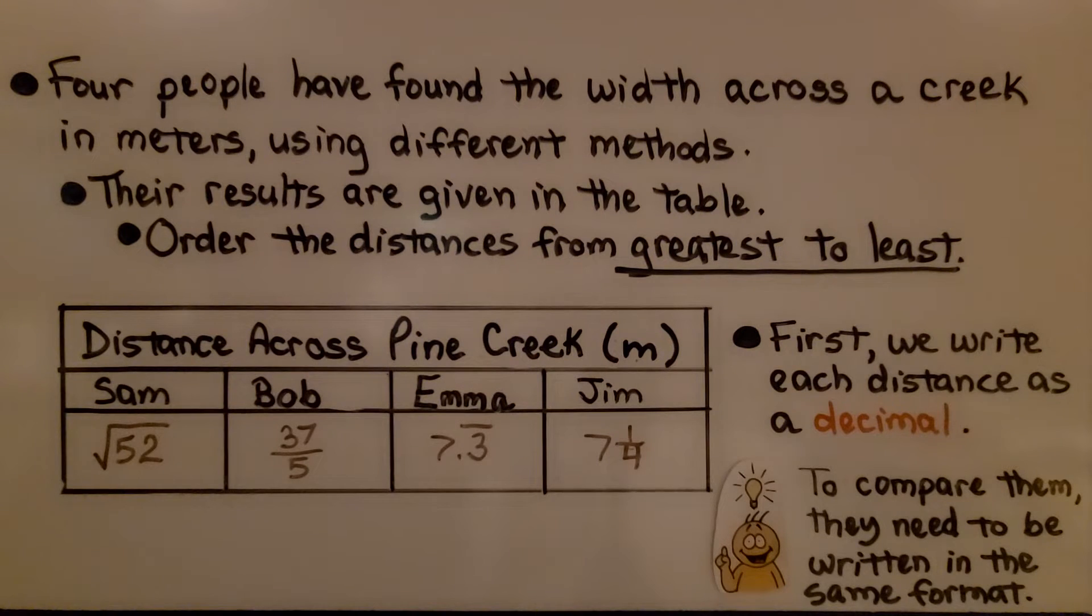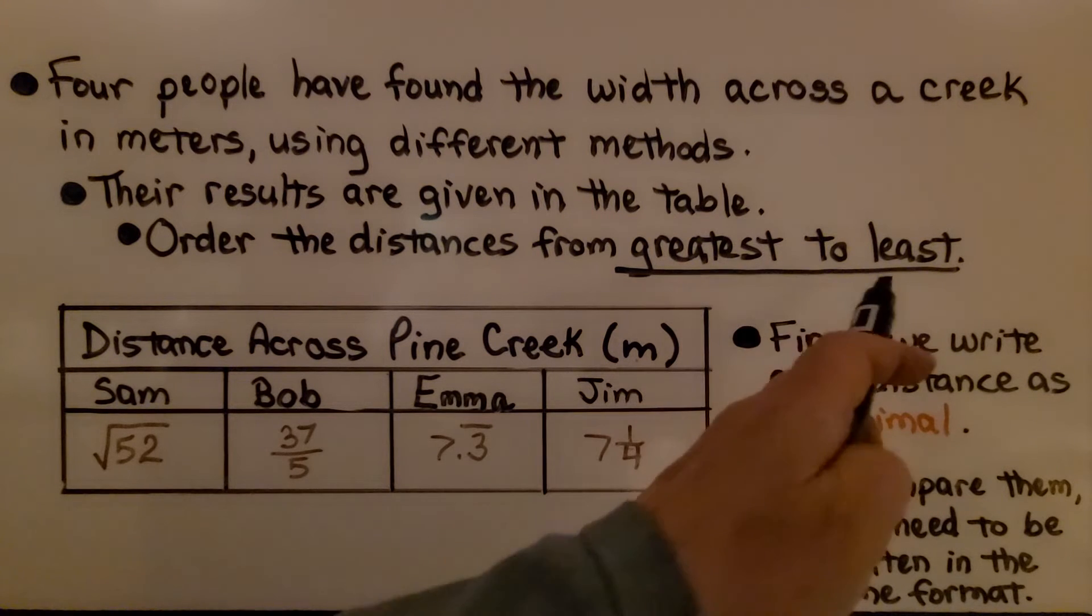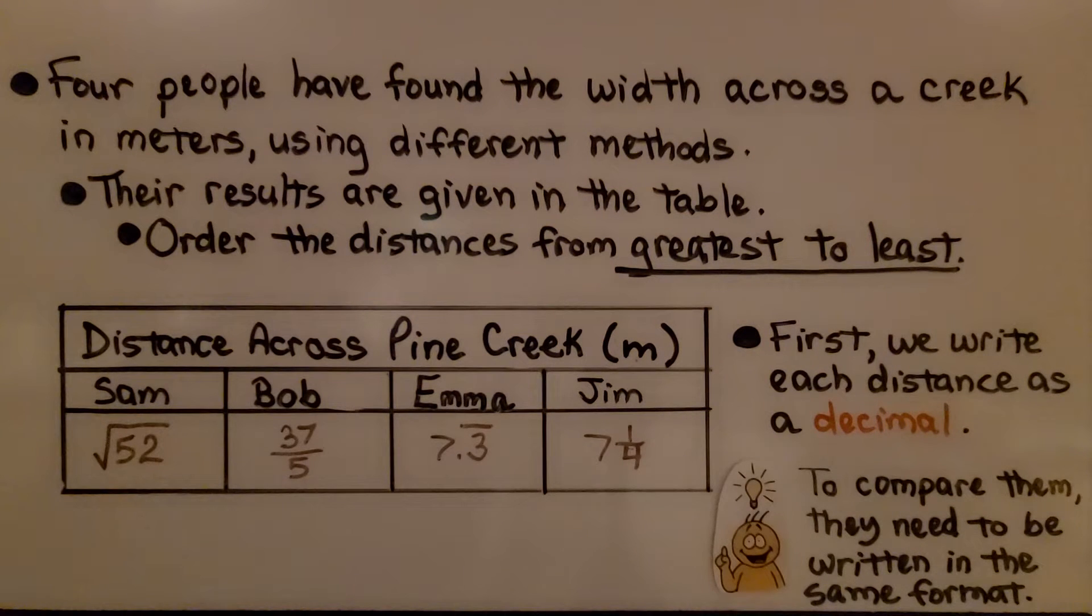Four people have found the width across a creek in meters using different methods. The results are given in the table. Order the distances from greatest to least. So remember, it's greatest to least now. The first thing we do is write each distance as a decimal. To compare them, they need to be written in the same format.